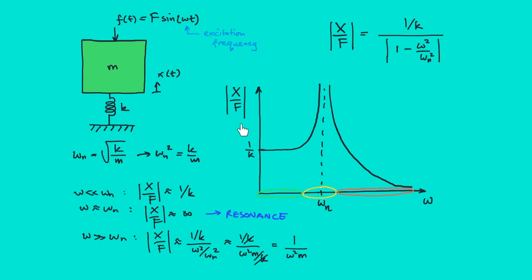Okay guys, so in summary we have seen the response of a single degree of freedom system towards an external dynamic force. The main takeaway here is that it shows what happens when the excitation frequency matches the natural frequency of the system.